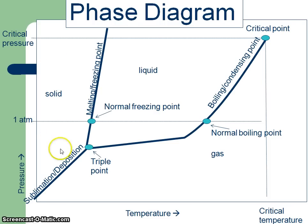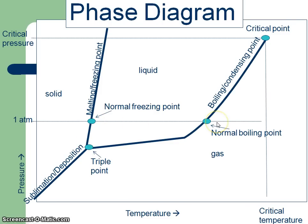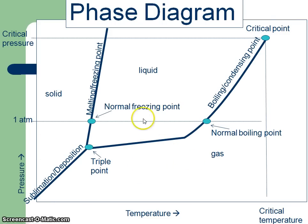If I ask you for the pressure and temperature of the triple point, you should be able to give me that. If I ask you for the temperature of the normal freezing point or the normal boiling point, you should be able to give me that. Or if I give you a pressure and a temperature, you should be able to tell me what's happening — what state you're in at that point.